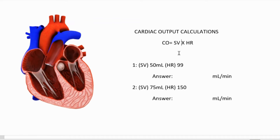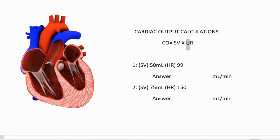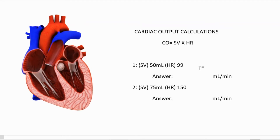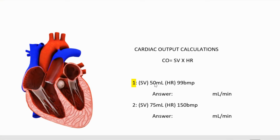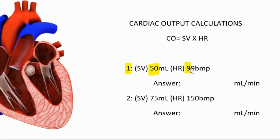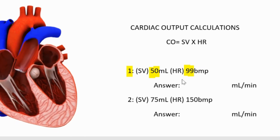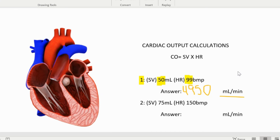The stroke volume is measured in milliliters, so our answer is going to be in milliliters per minute because our heart rate is a one-minute heart rate. For number one, we are going to take 50 milliliters times 99 beats per minute, and that gives us our answer of four thousand nine hundred and fifty milliliters per minute.